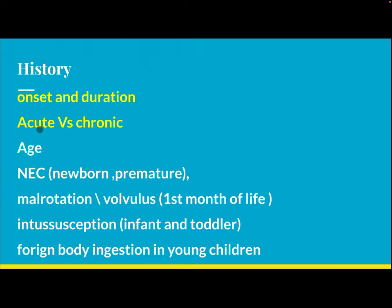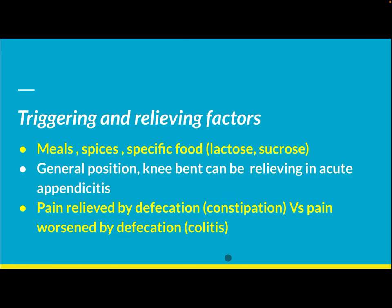Key history points include onset and duration — acute versus chronic — and age of onset. Necrotizing enterocolitis is common in newborns and premature infants. Malrotation and volvulus occur in the first month of life. Intussusception occurs in infants and toddlers. Foreign body ingestion is common in young children.